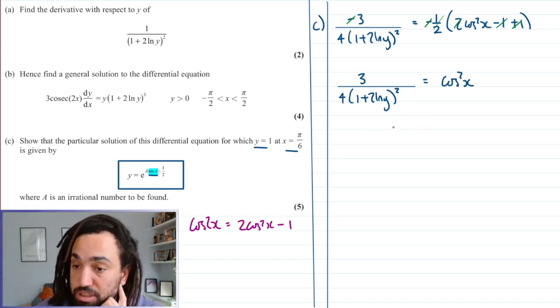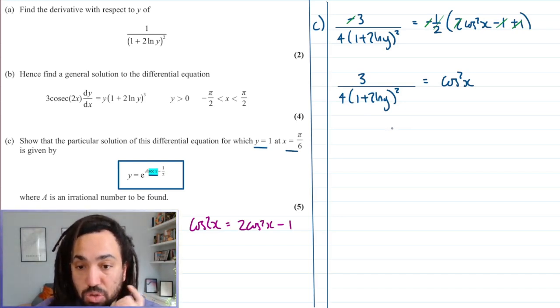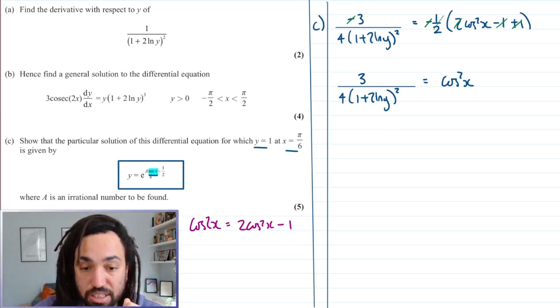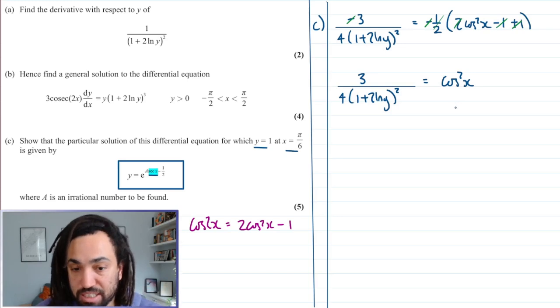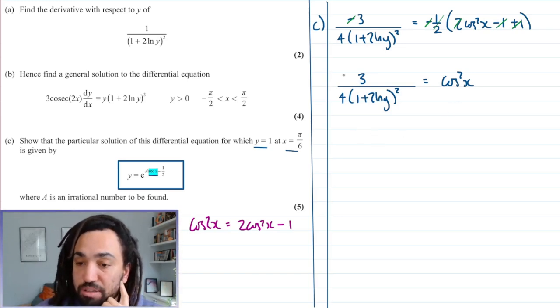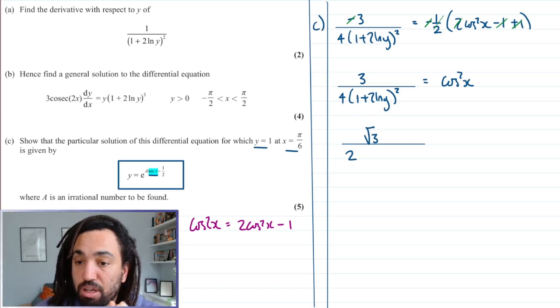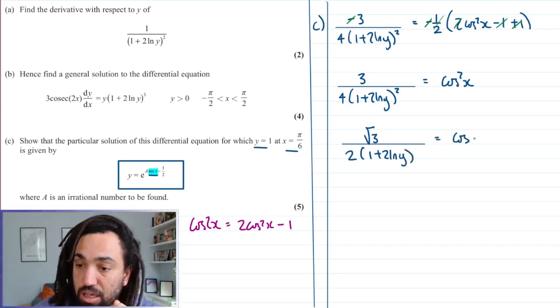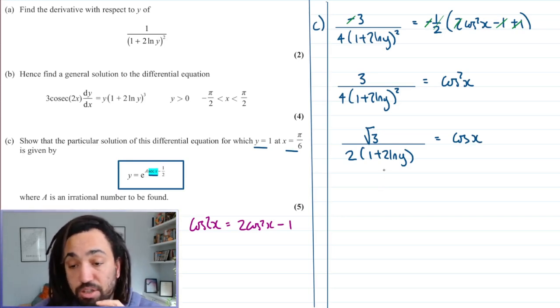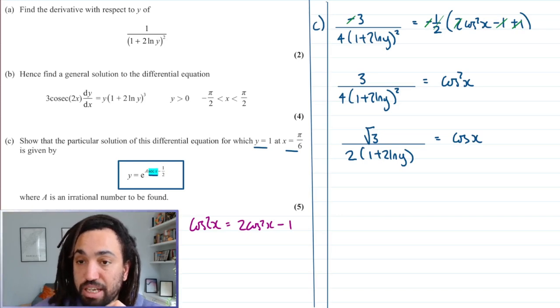First thing we can do is we can divide both sides through by this minus to get rid of that minus. So this is going to give us 3/4(1 plus 2 ln Y)². And then the minus 1 and the plus 1 are going to cancel out. We're also going to have a half times by the 2, so they're going to cancel out as well. So we're just going to be left with cos² X, which is nice. Because now we can square root both sides fully. And that's going to give us this sec X, well not sec X, but it's going to give us a cos X, which then we can take the reciprocal of.